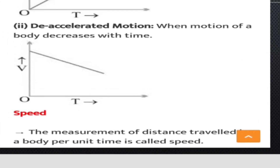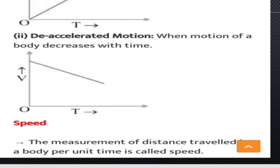This brings us to the next topic: accelerated motion. Non-uniform motion has two types. One is accelerated motion, and the other is decelerated motion.